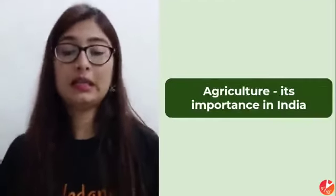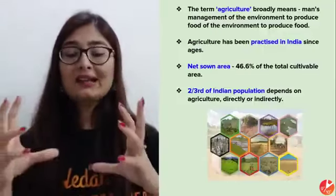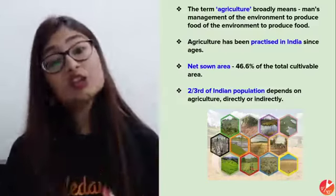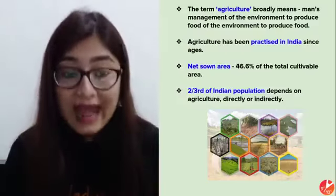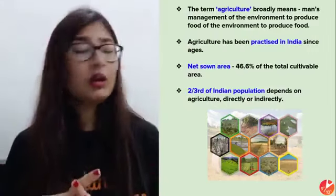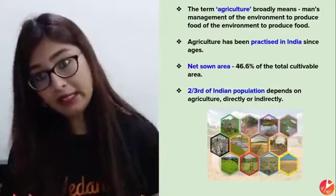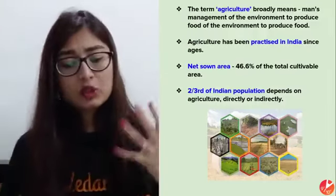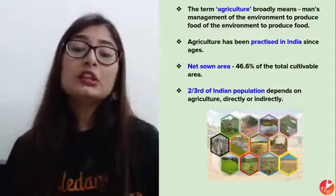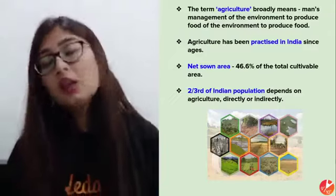Let's start with agriculture in India and its importance. Agriculture comes from a combination of two Latin words — 'ager' meaning land and 'culture' meaning cultivation. So it is basically the cultivation of land to grow crops, livestock, and fruits. In simple terms, it is a human's management of land and the environment to produce food for people.